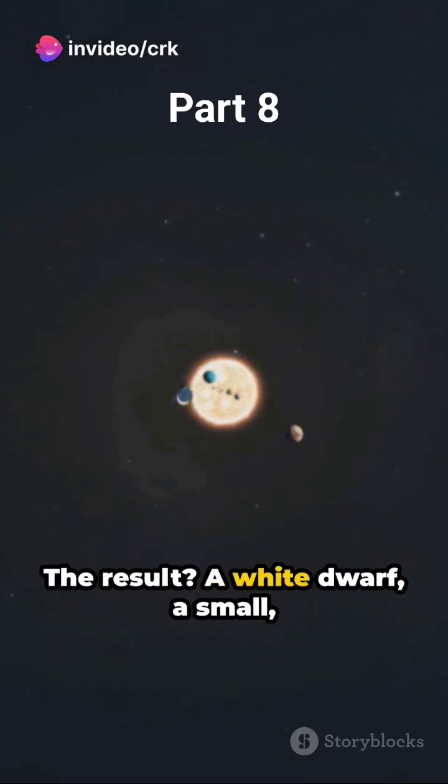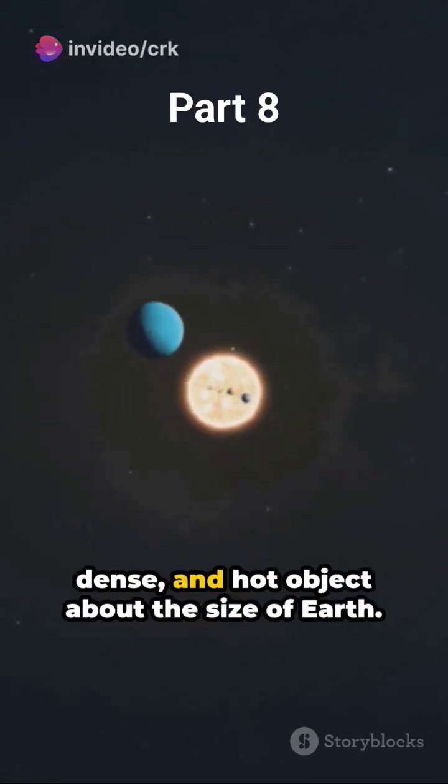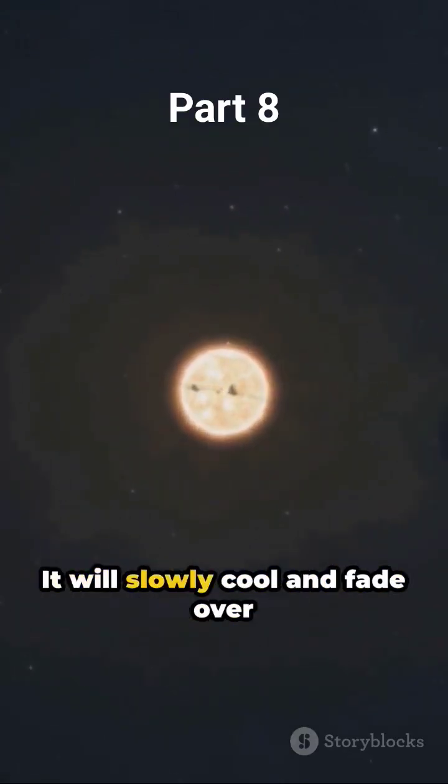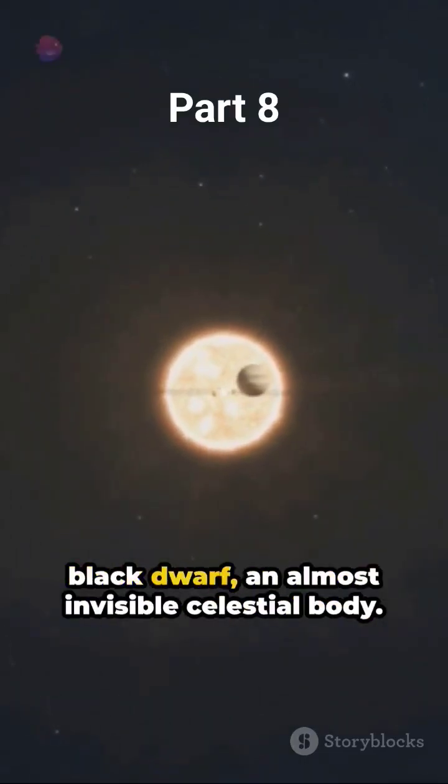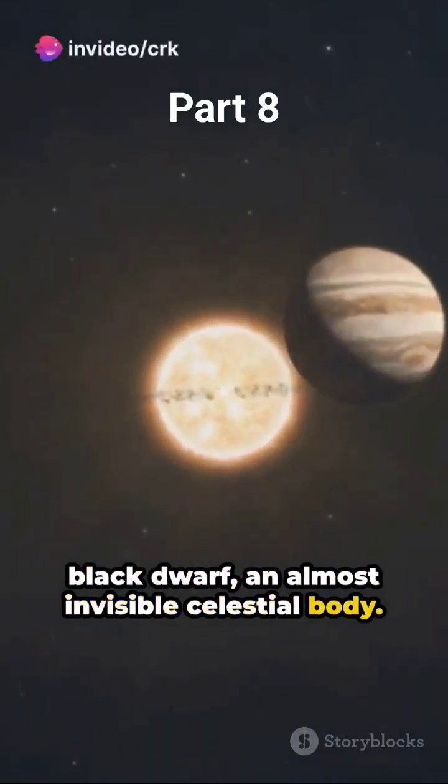The result? A white dwarf, a small, dense, and hot object about the size of Earth. It will slowly cool and fade over billions of years, eventually becoming a black dwarf, an almost invisible celestial body.